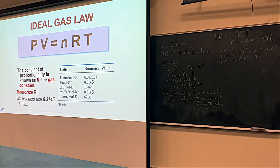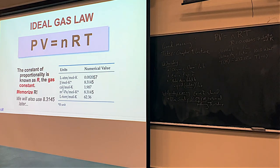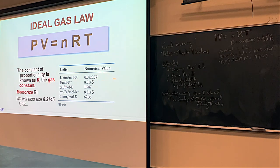In later chapters, we're going to use another version of R. If you change liters-atmospheres into joules, the number changes. 8.3145 is the value for R if you use joules per mole Kelvin. We're going to use this one in future chapters, while 0.082057 is important for what we've got right now.